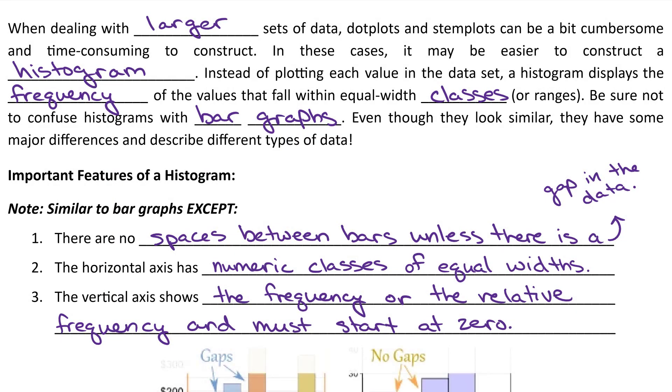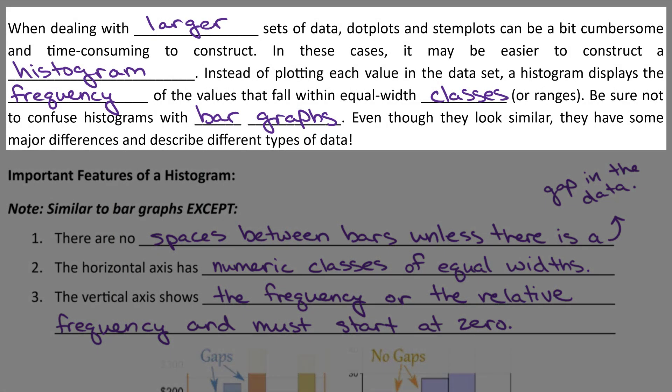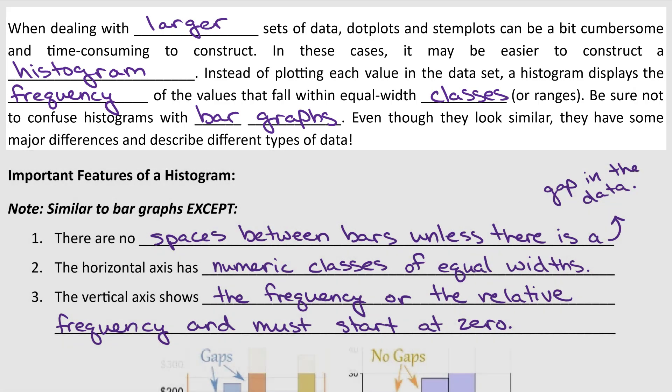So today we're going to jump right into histograms. Histograms are a great way to represent quantitative data, especially when you have a larger set of data. I can't imagine drawing 100 dots or 100 leaves on my stem and leaf plot. So when you have a larger set of data, a histogram really is our go-to. We also are going to focus on the differences between histograms and bar graphs.